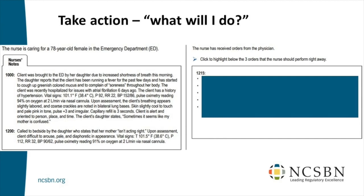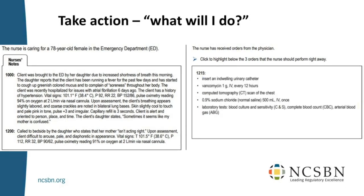The final item — evaluate outcomes: 'The nurse has performed the interventions as ordered. For each assessment finding, click to specify if the finding indicates the client's condition has improved, has not changed, or has declined.' There's a before and after. Participants suggested: pulse ox 95%, pulse 88, JVD, crackles, BP 120 over 85, respirations 12, decreased temperature, decreased work of breathing, shortness of breath. The item writer used: respirations 36 (worse), BP 118 over 68 (better), pale skin tone (same-ish), pulse ox 91% (stable), and interacting with daughter at bedside.